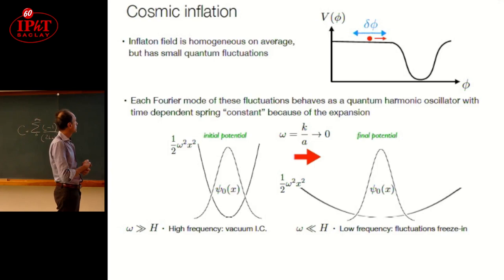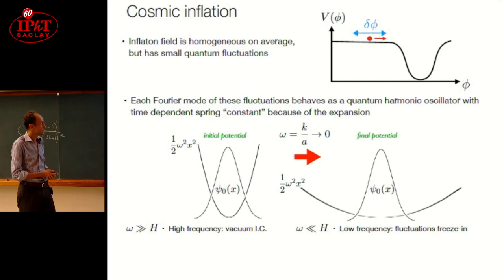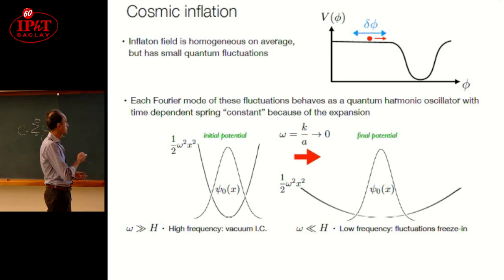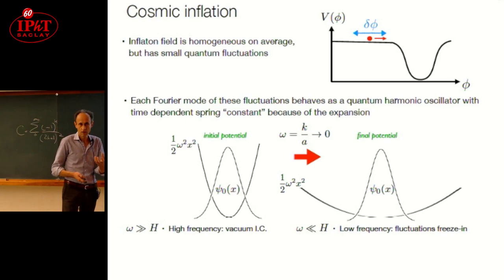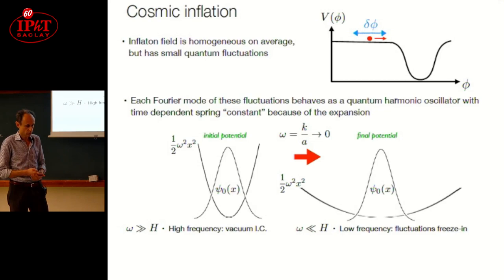In principle, you can describe these fluctuations, each Fourier mode of these fluctuations, as a quantum harmonic oscillator with a time-dependent spring constant because of expansion. This spring constant became very small during the inflationary times, non-adiabatically, so that what we initially thought was a vacuum state, at the end of inflation became a highly excited state. This explains the generation of perturbations during inflation.